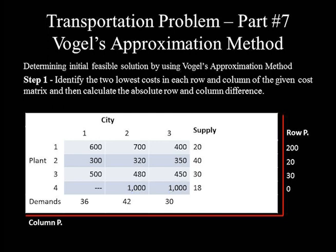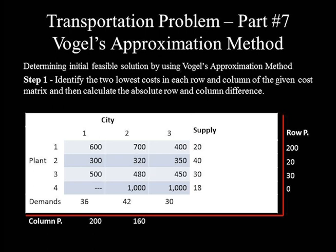Moving to column penalties: column 1 lowest cost is 300, second lowest is 500, so 500 − 300 = 200. Column 2 lowest cost is 320, second lowest is 480, so 480 − 320 = 160. Column 3 lowest cost is 350, second lowest is 400, so 400 − 350 = 50. All row and column penalties have been calculated, so we move to Step 2.